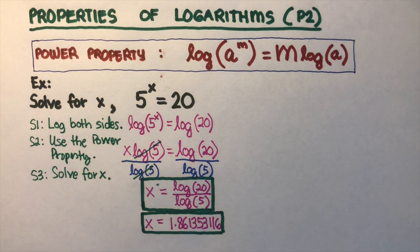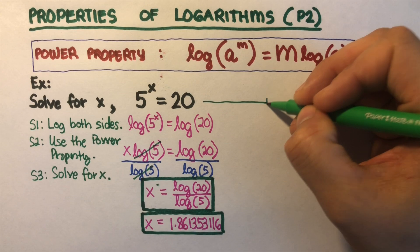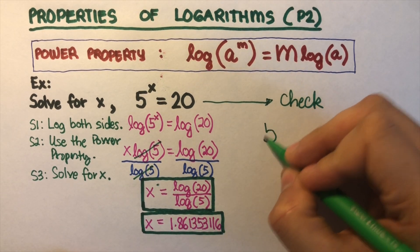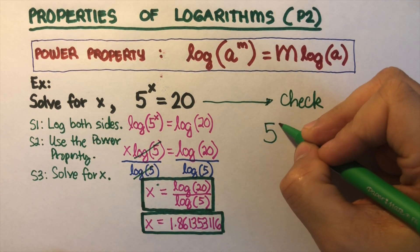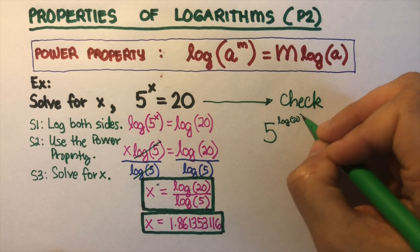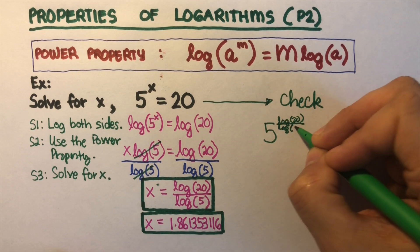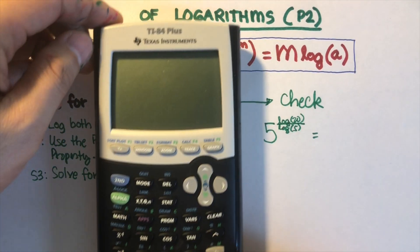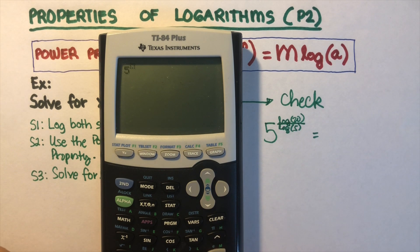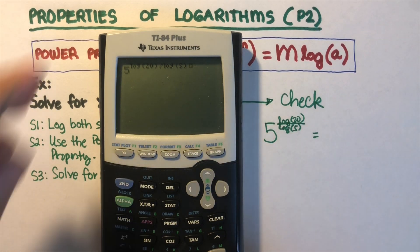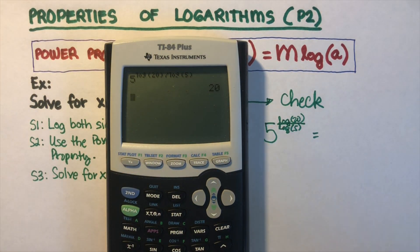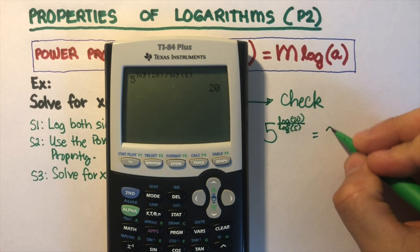Now let's check if we got the correct answer by plugging back the x into the equation. So we're now checking. First we have 5 to the power log of 20 divided by log of 5. That's the exponent for the whole thing. Let's use the calculator to see what the value is. So that would be 5 to the exponent log of 20 divided by log of 5. Our expected answer is 20, and it is equal to 20. Good. So we are correct.